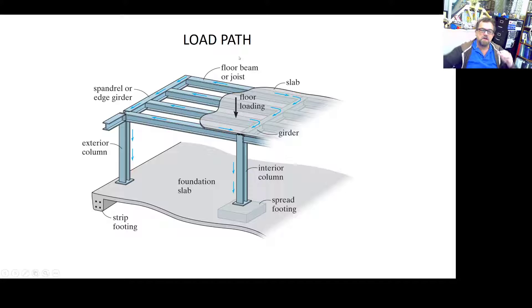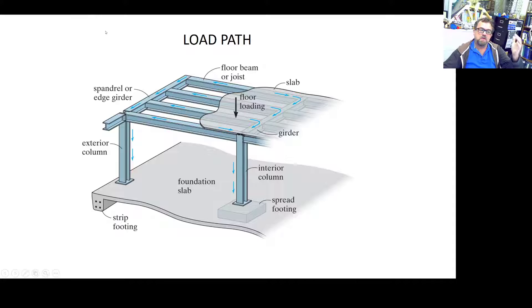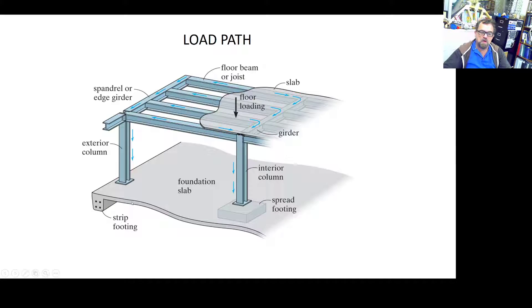If you have a second, third, or fourth story, the process is the same: the slab transfers to the joists, which transfer to the girders, which transfer to the column on top. You keep adding the weights until you go to the bottom. That's the way it should go if things are straightforward — but things are not always straightforward.